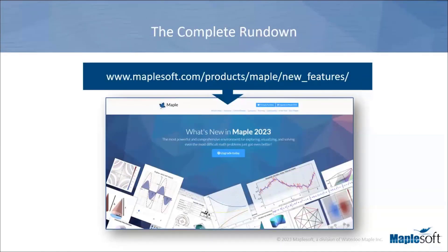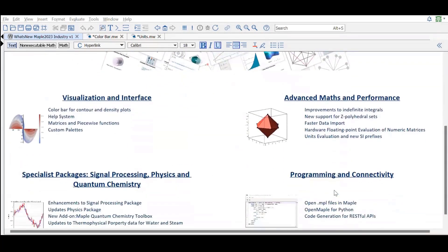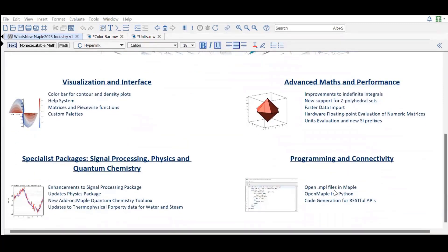If you want the full range of new features in Maple 2023, you'll find it online on the website. We do have user manual examples of the applications that you can follow step by step to use the new commands and enhancements. But for today's presentation, I'm not going to show everything. I'm going to focus on a few of the developments we've made and discuss these new features and open them in Maple. So here we go — we are in Maple 2023. Today I'd like to discuss these four areas: visualization and interface, advanced math and performance, some of the specialized packages, and programming and connectivity.